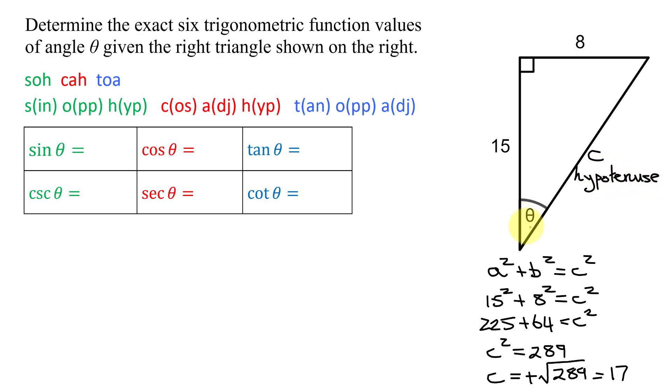And for angle theta, the opposite side is going to be my 8, so this is opposite angle theta. And the 15 is adjacent to angle theta, so this is my adjacent side. So now I've labeled all my sides. Let's start by finding the sine of theta.